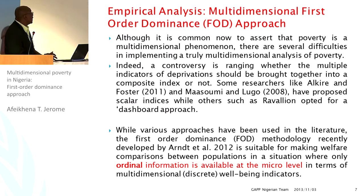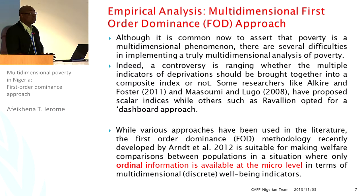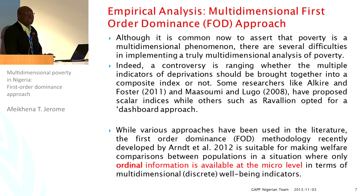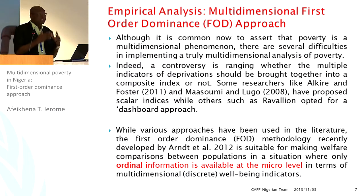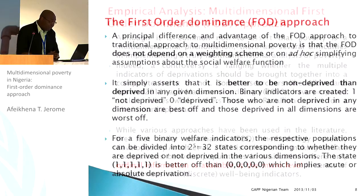Currently, a controversy is raging on whether you should have a scalar indicator — judging from the recent Human Development Report that tried to present some form of multidimensional poverty — or whether you should have a dashboard approach, as people like Ravallion have opted for. People are trying to resolve that controversy. But by and large, the methodology we have adopted is particularly apt, because what we have is ordinal information at the micro level, and that methodology can capture that. We are also interested in what is happening at the sub-national level, which is why we are very happy with this methodology.